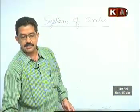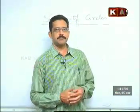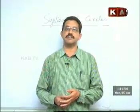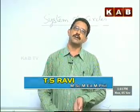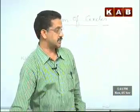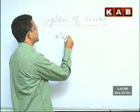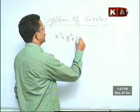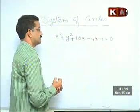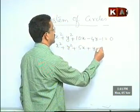Now it's time to discuss limiting points. This question was given in 2009, 2010, and 2012 for seven marks — note its importance. The question is: find the limiting points of the circles x² + y² + 10x − 4y − 1 = 0 and x² + y² + 5x + y + 4 = 0.